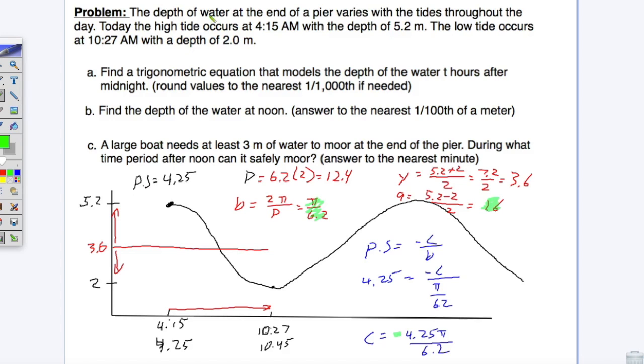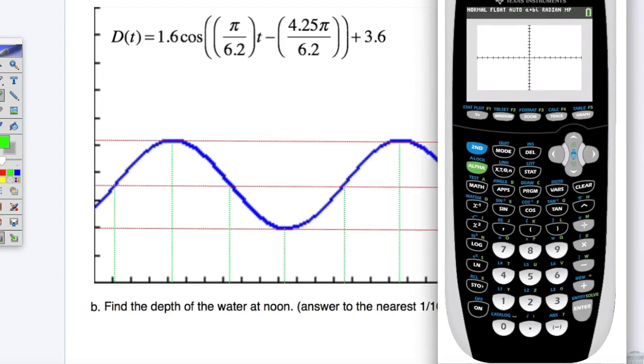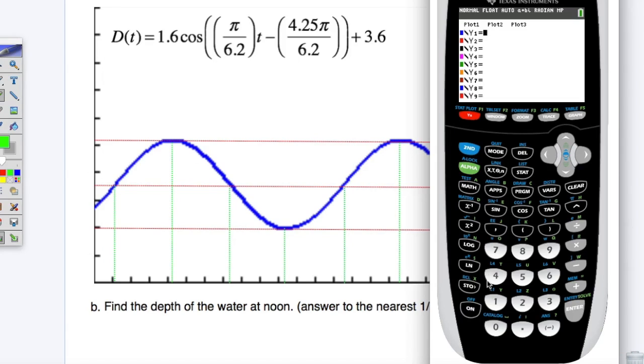So we got part A, and you know what, let's go ahead and make sure that this works. To make sure it works, we're going to pull up the calculator and put this equation into the calculator. 1.6 cosine, and then in parentheses, π divided by 6.2 times t, and I don't have a t so I'm going to use x, minus in parentheses 4.25π divided by 6.2, close all the parentheses, plus 3.6. Now we're going to graph this.